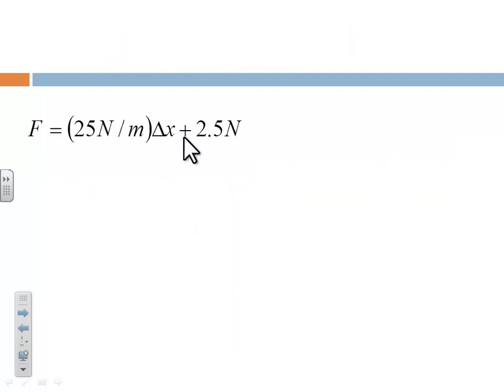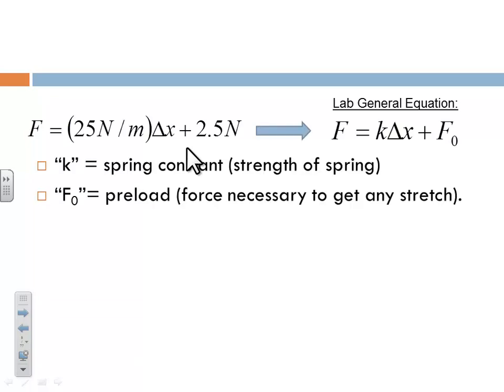So this equation right here, we found out, basically is the specific equation to make predictions about a red spring. Only the red spring that we use in our lab. But we always want to generalize our equations so they apply not just to what we're doing in the lab, but it applies to any spring that we're going to deal with in real life.